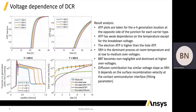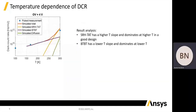We can see from the bottom right plot that it is possible to achieve a good match with the measurements. From the temperature dependence, we can see that SRH with trap-assisted tunneling has a higher temperature slope and dominates at higher temperatures in a good design. Band-to-band tunneling, on the other hand, has a lower temperature slope and dominates at lower temperatures.